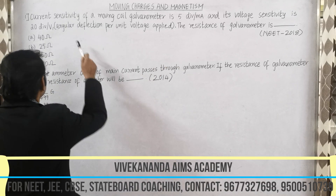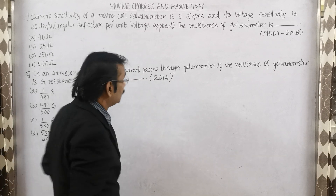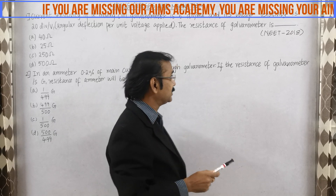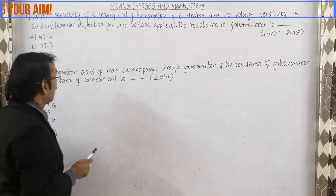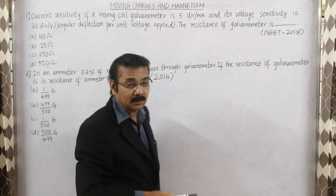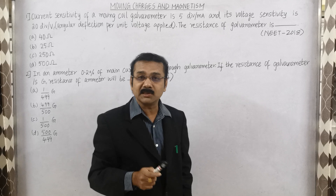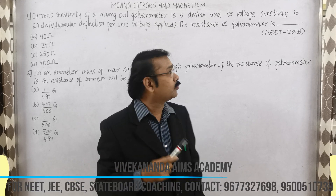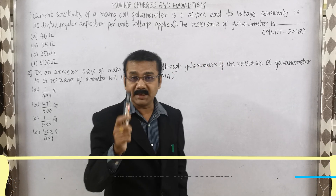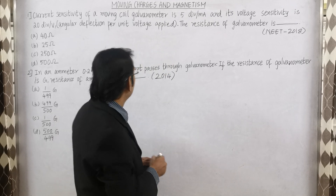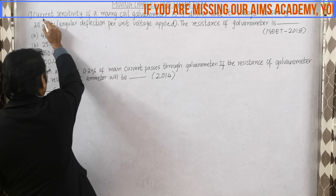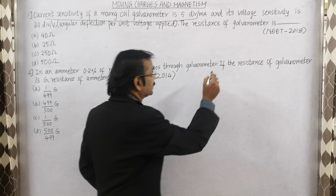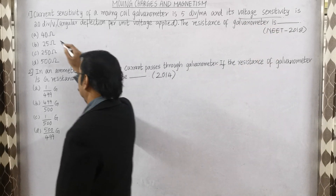See the first question here. The first question is: the current sensitivity of a moving coil galvanometer is 5 divisions per mA and its voltage sensitivity is 20 divisions per volt. The resistance of the galvanometer is dash. This question was asked in the year 2018.